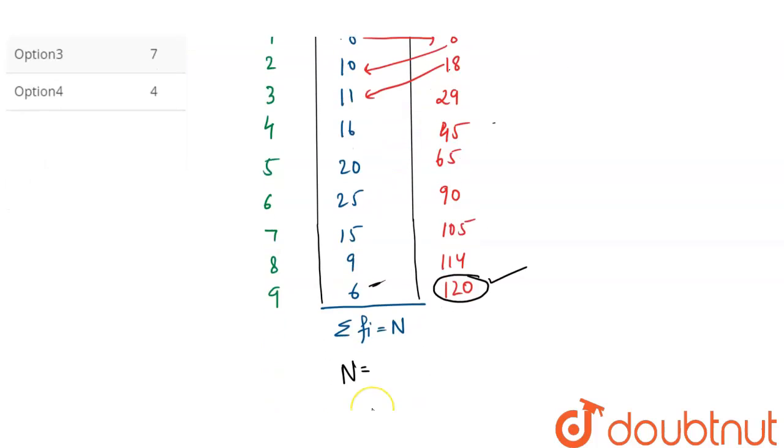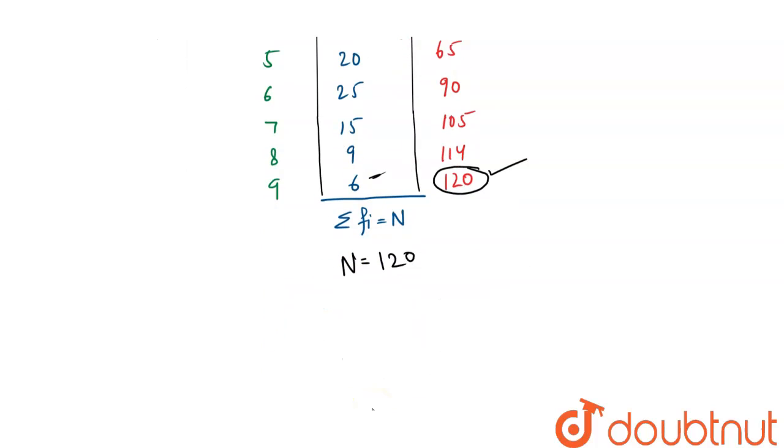So we got n equals 120. Now as we need to calculate the median, we can see that 120 is even. So to calculate median, we will divide n by 2. So we get 120 divided by 2 which is equal to 60.